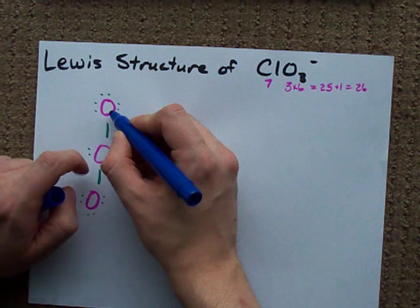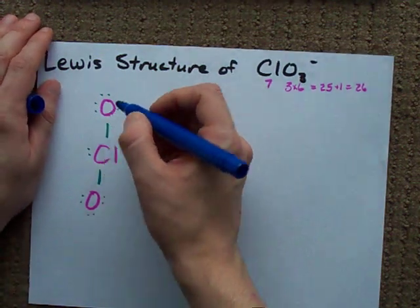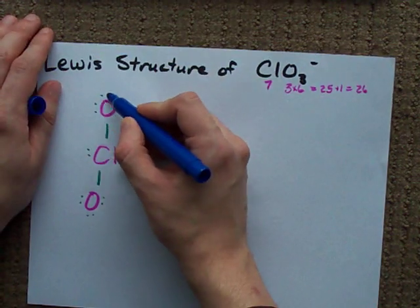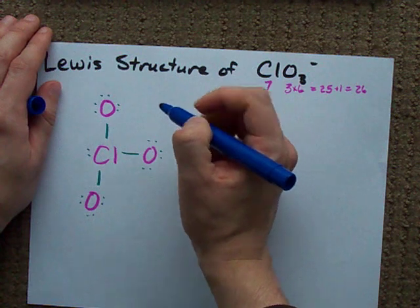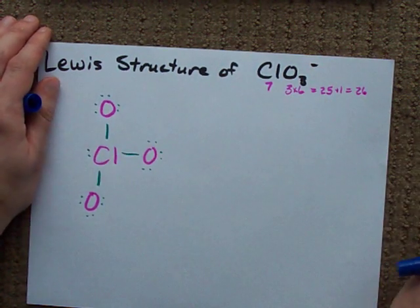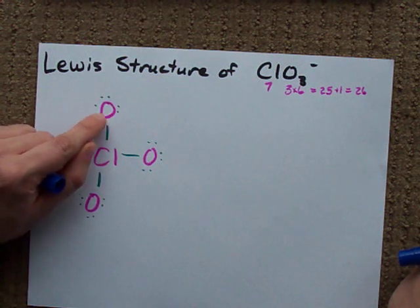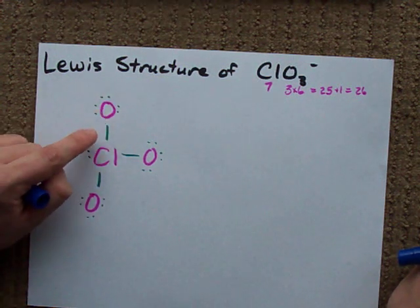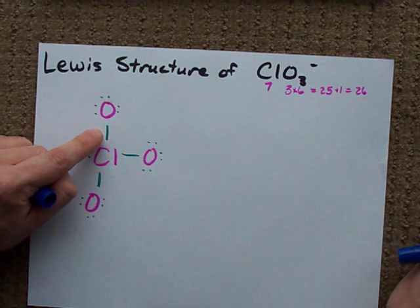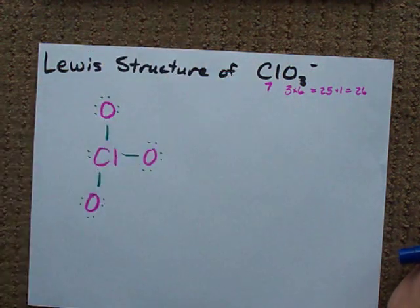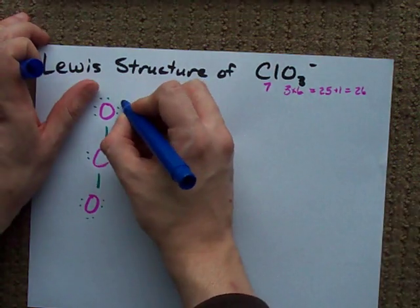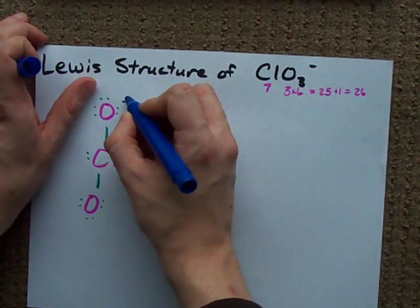This oxygen brought 6 electrons with it, and right now it has 1, 2, 3, 4, 5, 6, 7 electrons around it. One for each of the lone pair electrons, because those belong to the O only. And 1 for each bond, because we assume each atom here gets the equivalent of 1 electron.